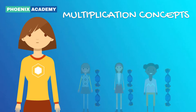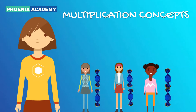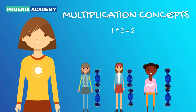Now let's assume that each one of you have 2 candies in hand. So you alone have 2. You and your first friend have 4 in total. That is, 2 plus 2 is 4. Or I can say 2 times 2 equals 4.